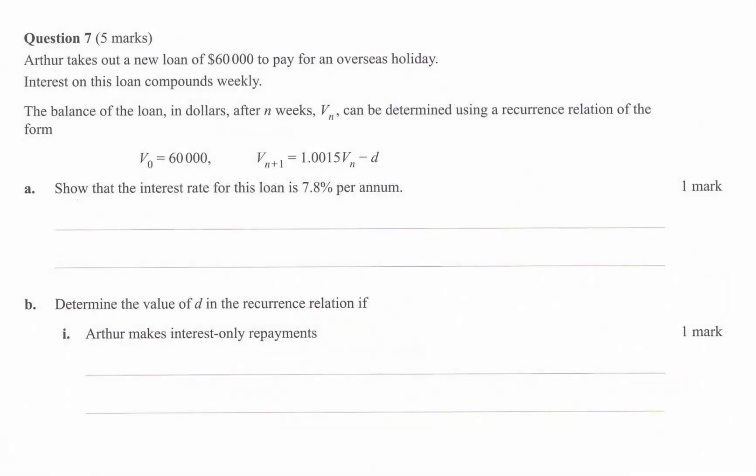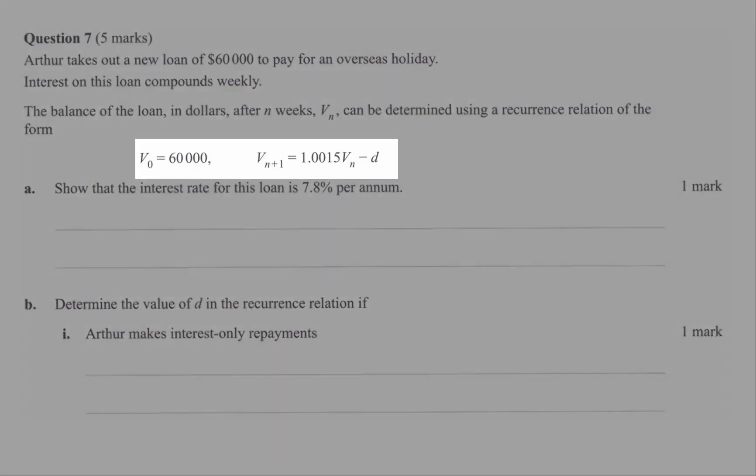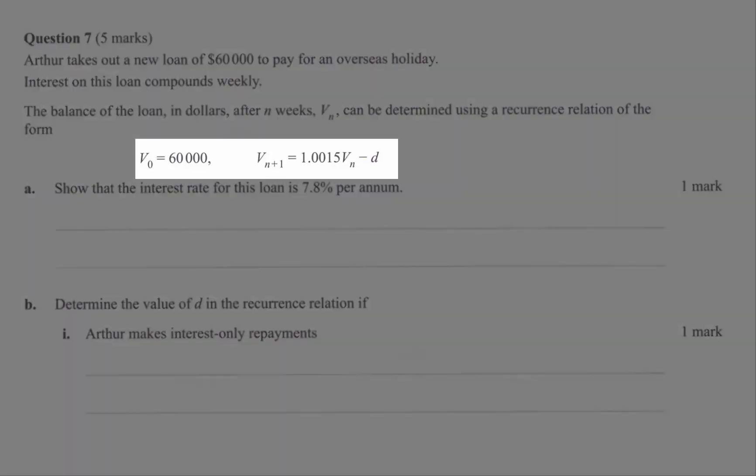It says here, Arthur takes out a new loan of $60,000 to pay for an overseas holiday, compounding interest weekly. The balance of loan after N weeks is determined by a recurrence relation. And you can see here, we've got this D in the recurrence relation.